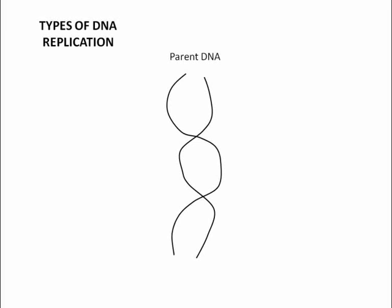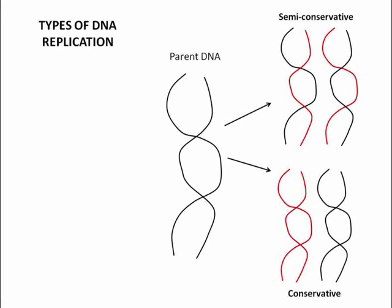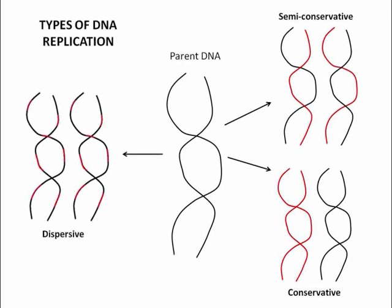When DNA is replicated, the newly formed genetic information may contain two copies of the parent strand, or two new strands, or one parent strand and one new strand, or strands which contain a mixture of both the parent DNA and new DNA. This is called semi-conservative, conservative, and dispersive replication respectively.